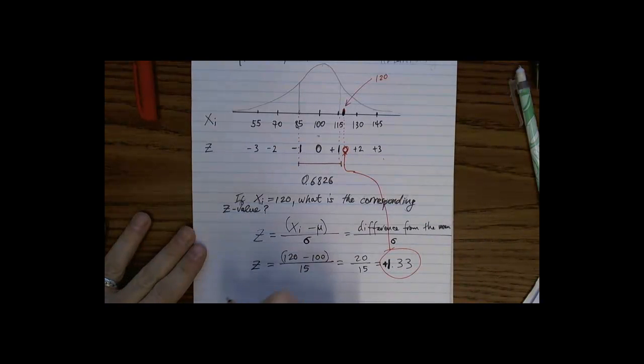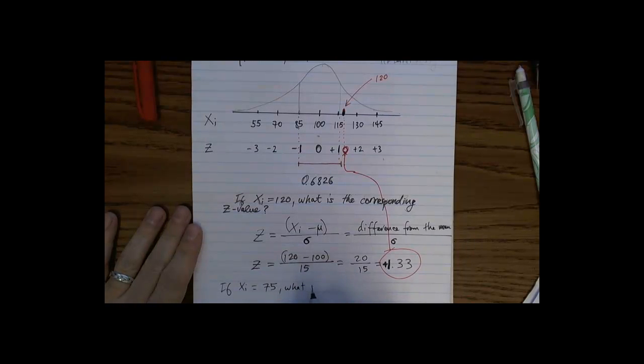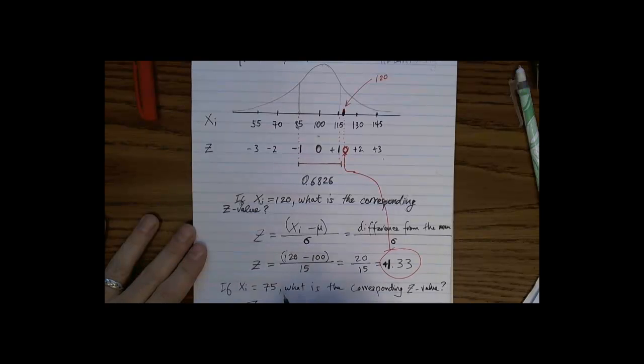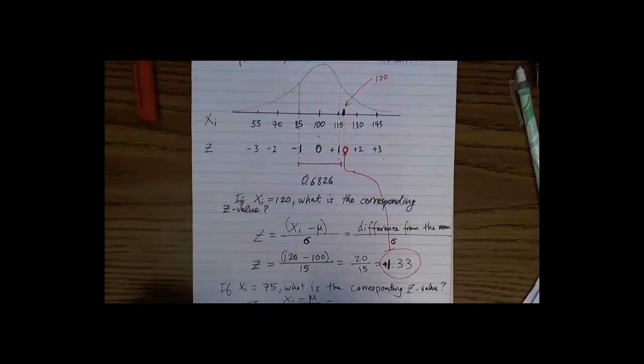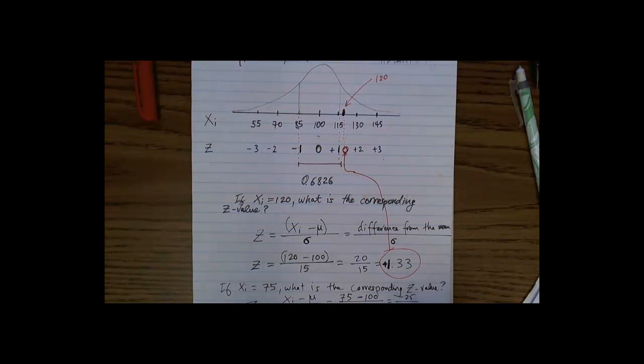So that is how you could find a Z value if you're given a raw score. We could likewise do this for, let's say, if Xi is equal to 75, what is the corresponding Z value? So we know Z is equal to Xi minus Mu divided by sigma. So in this instance, Xi is going to be 75. So that's a particular observation, right? Minus 100 divided by the standard deviation.